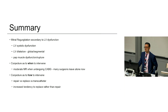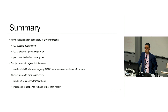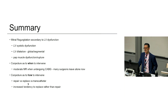In summary, MR due to LV dysfunction encompasses LV systolic dysfunction, LV dilatation — global or segmental — and papillary muscle dysfunction. There is conjecture about when to intervene: moderate MR at the time of CABG most of us now leave alone. The debate continues about how to intervene — repair, replace, or transcatheter — and we are increasingly replacing these valves more than we were in the past. Thank you.